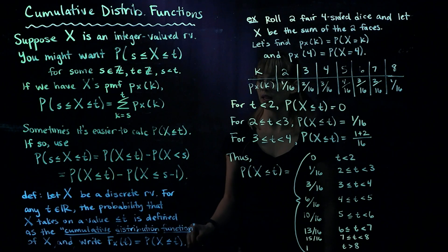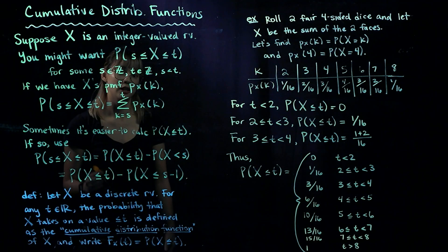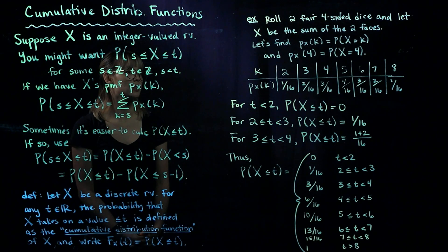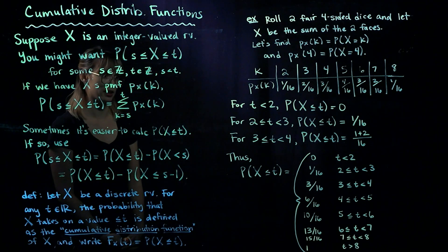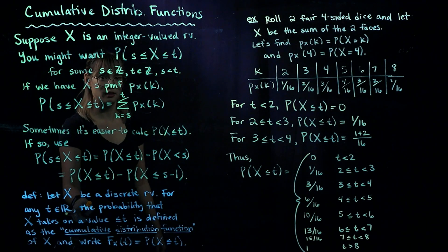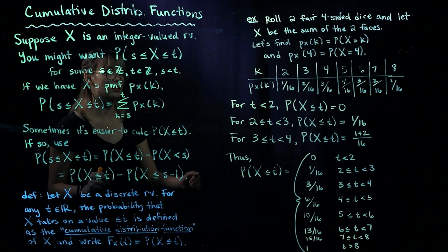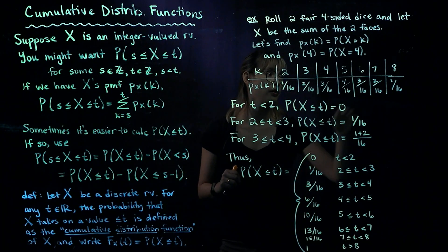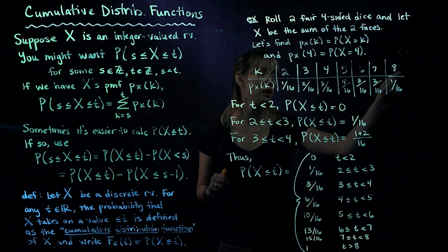So the CDF is a way to connect our PMF to this cumulative probability. Let's see an example. We go back to the example where we roll two fair four-sided dice and add up the result. X is the sum of the two faces, and we have the PMF from a previous video. Now we want to find x's CDF, and it needs to be defined for all t that are real — including values below 2 and values of t greater than 8.